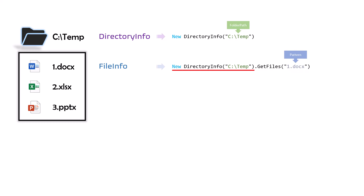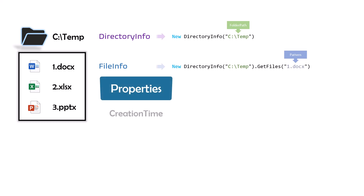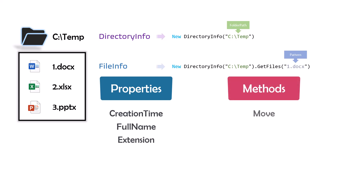We can also change this statement — if I already used the first statement for DirectoryInfo and stored it in a variable, for example 'di', I can replace the first part with 'di'. FileInfo also has specific properties we can use to get more information about the file, like CreationTime, FullName, Extension, and many others, or methods like Move, Copy, Delete, and many other methods.